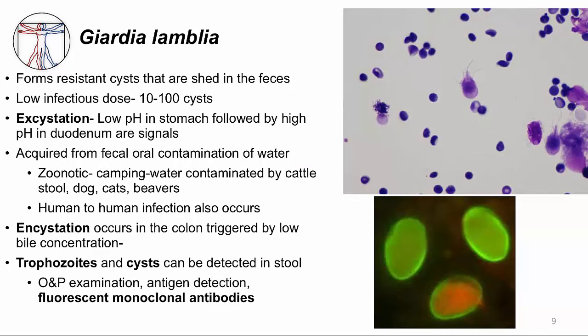So how do we get Giardia? In order to transmit, Giardia produces cysts, which are shed in feces, and it's the cysts that we unknowingly ingest. These cysts are very resistant in the environment and very infectious — you need to eat only 10 to 100 cysts to be infected. Once ingested, the cysts know when to hatch into a trophozoite, called excystation, first experiencing the low pH in the stomach and then the high pH of the duodenum. In the developed world, most infections are zoonotic, involving campers or travelers who drink water contaminated by various animals. In more endemic regions, there is also human-to-human transmission from infected human feces.